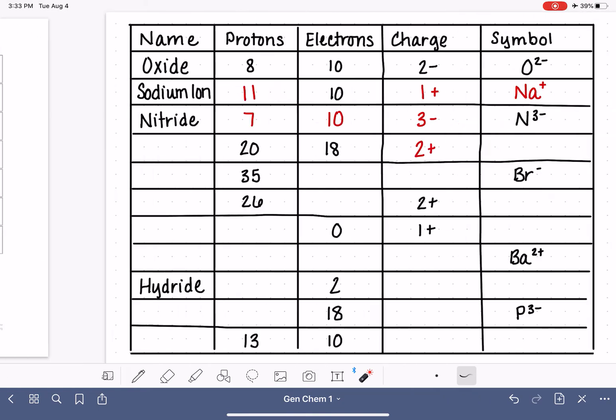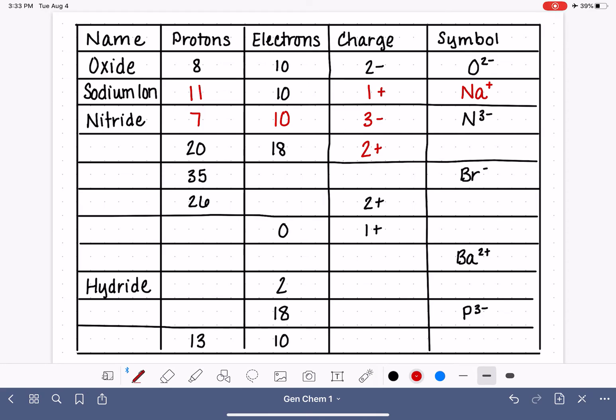So let's copy that down over here. Calcium with a 2 plus charge. Because this is a cation, its name is calcium ion.